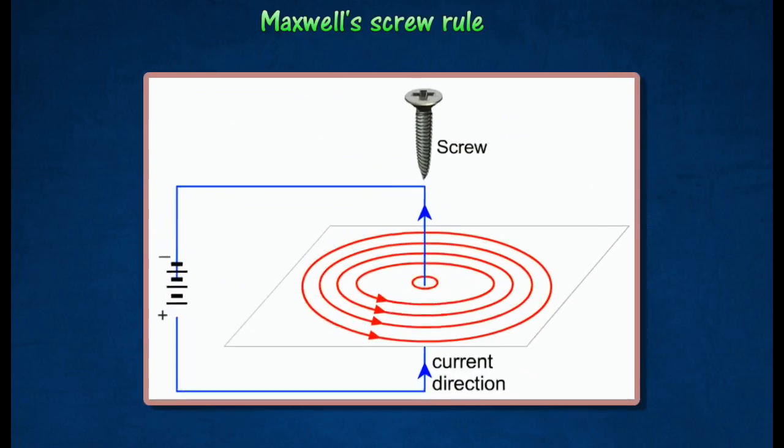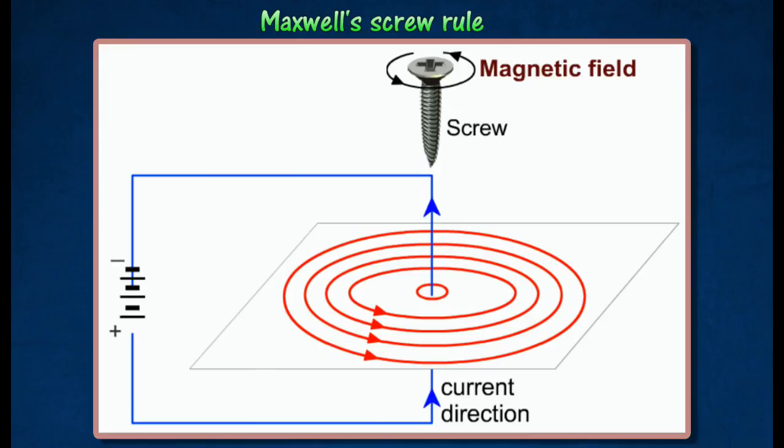According to Maxwell's Screw Rule, the direction of rotation of the screw gives the direction of the magnetic field if the screw moves upward in the direction of the current in the wire.